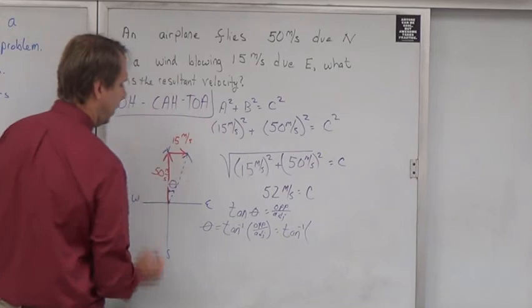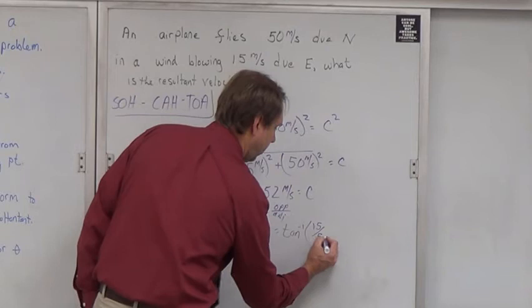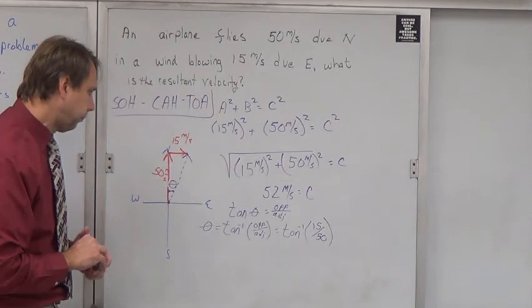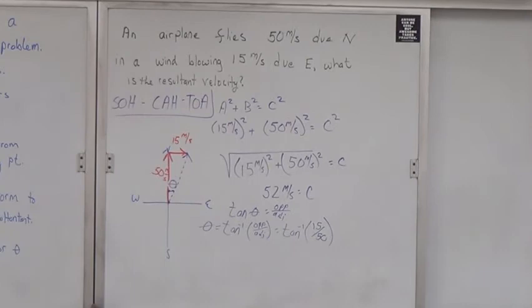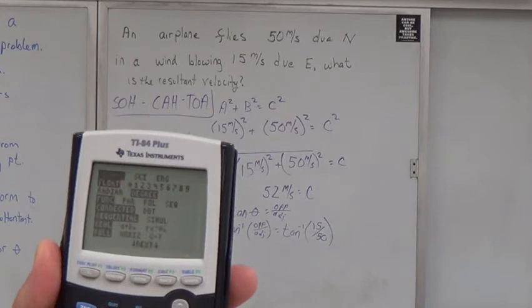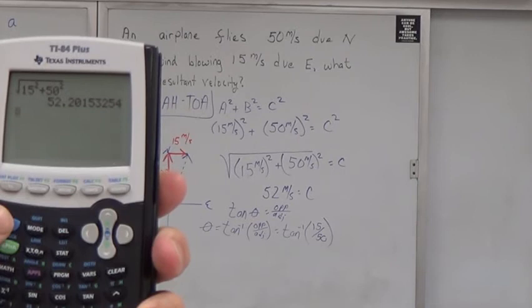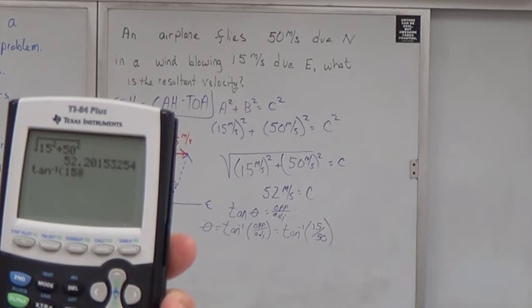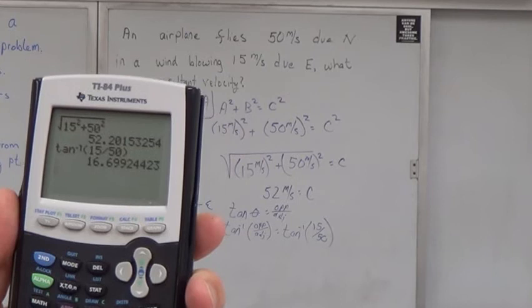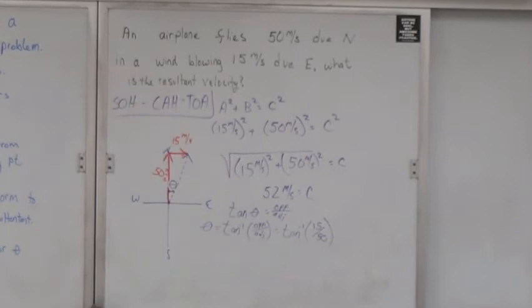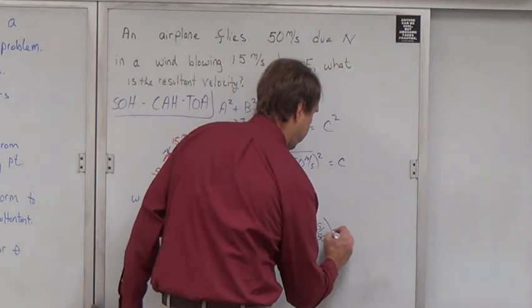Did I forget to put units in? No. I simply realized that meters per second divided by meters per second canceled out. When you get your calculator, if you're using a TI-84, you're going to want to hit mode and make sure you're in degree mode. If you're in radian mode, you're not going to get an answer that makes a whole lot of sense for us in this class. We're going to make sure we're in degree mode. Then we're going to hit second tangent. That puts a negative one there. And then just 15 divided by 50. And we get 16.69924423. But we're rounding to two sig figs. I'm calling it 17, 17 degrees.